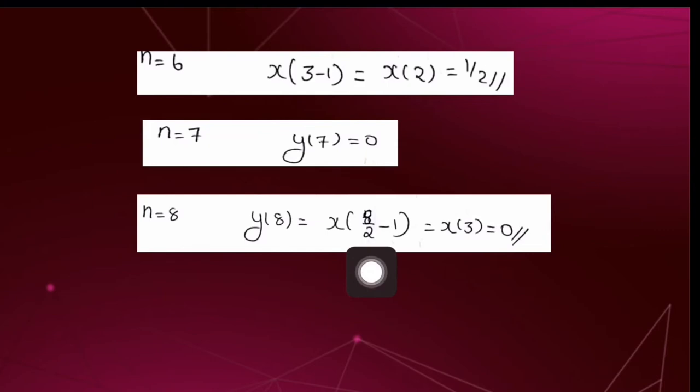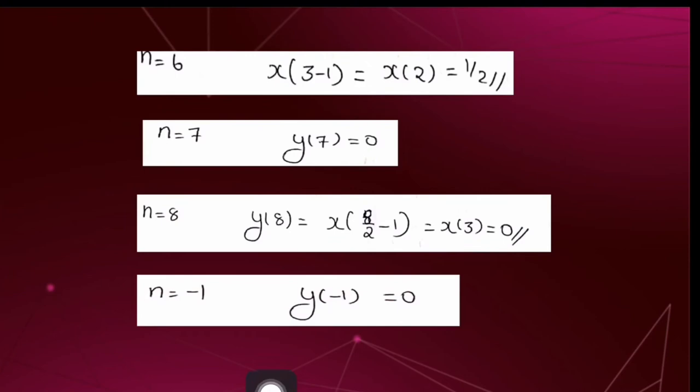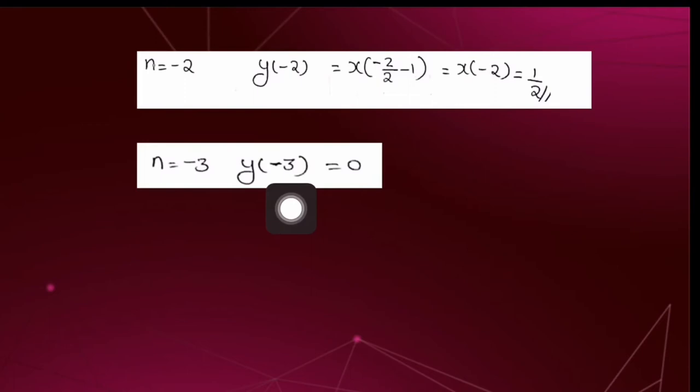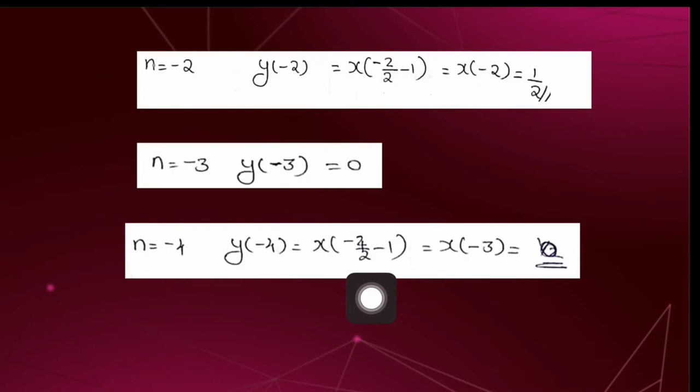At n = 8, we get y[8] = x[8/2 − 1] = x[3] = 0. At n = −1, y[−1] = 0 since it is odd. At n = −2, y[−2] = x[−2/2 − 1] = x[−2] = 1/2. y[−3] = 0 since it is odd. At n = −4, y[−4] = x[−4/2 − 1] = x[−3] = 0. Thus we have obtained all elements of y[n].